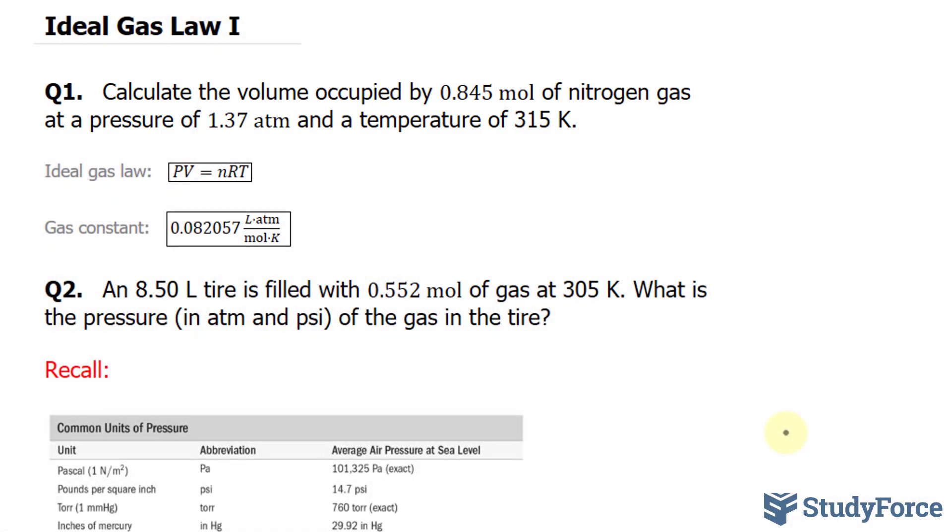For this, we'll use the ideal gas law formula, which is written right here, where PV is equal to nRT. R is a gas constant and it's provided underneath. T represents the temperature, n represents the number of moles, P represents the pressure and V represents volume.